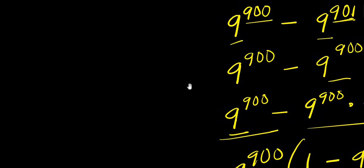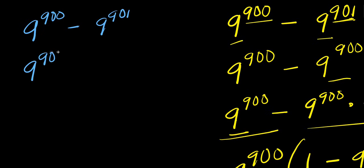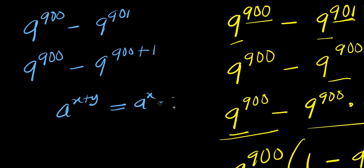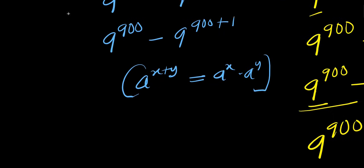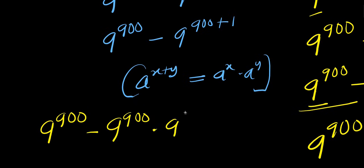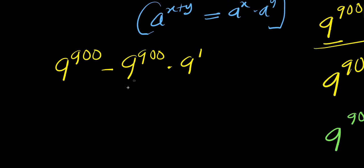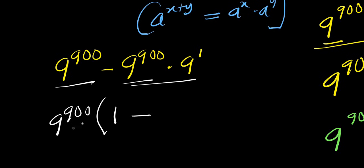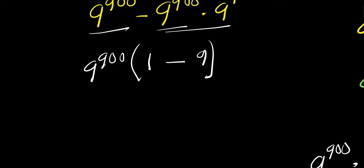Let's consider another approach. We still have the same problem: 9^900 minus 9^901, which is 9^900 minus 9^(900+1) times 9^1. Applying the exponent rule a^(x+y) = a^x times a^y, we get 9^900 minus 9^900 times 9^1. Factoring out 9^900, we again get 9^900 times (1 minus 9).